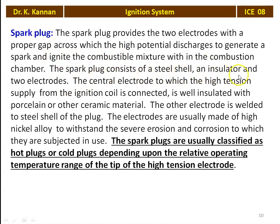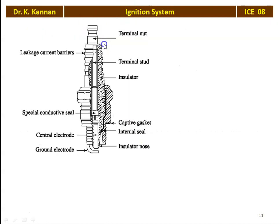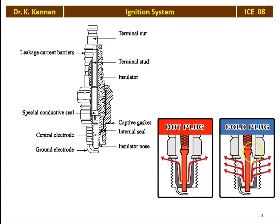The central electrode to which the high tension supply from the ignition coil is connected is well insulated with porcelain or any other ceramic material. The other electrode is welded in the steel shell of the plug. The electrodes are usually made of high nickel alloy to withstand the severe erosion and corrosion to which they are subjected in use, as they are exposed to hot gases at high temperature. Spark plugs are classified as hot plugs or cold plugs depending upon the relative operating temperature range of the tip of the high tension electrode. When temperature is high, they are called hot plugs; when temperature is low, they are called cold plugs.